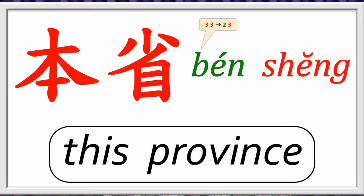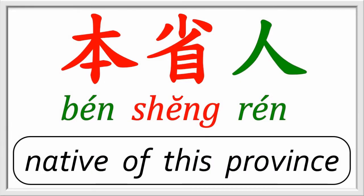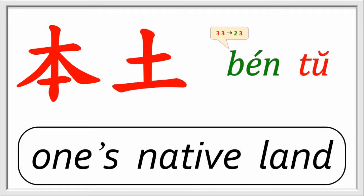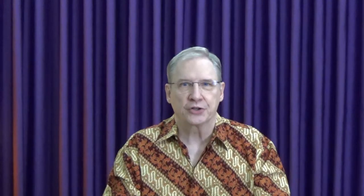In lesson seven, we learned that the planet Jupiter is called 木星 in Chinese. Now we can learn the name of Saturn, the second largest planet in our solar system: 土星. In lesson eight, we learned that 本省 referred to the province we are in at the time, and 本省人 is a native of that province. Likewise, 本土 describes one's native land, its language, culture, and customs. The expression 出土 is used to talk about archaeological finds that have been unearthed or excavated — literally, coming out from the earth.